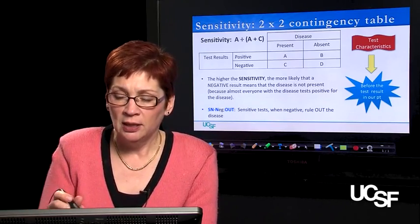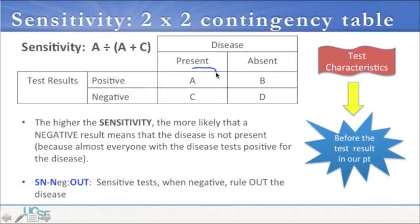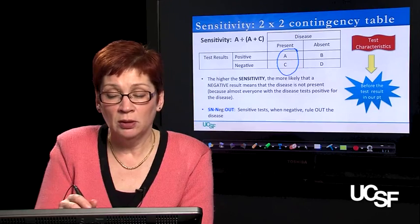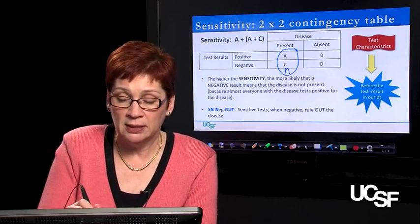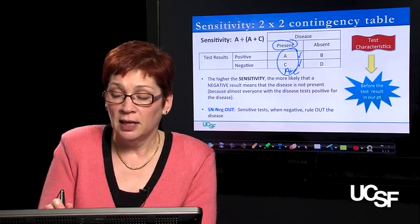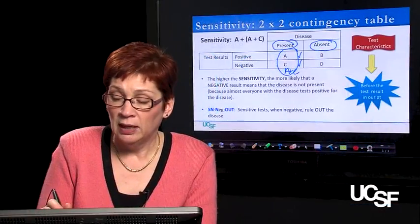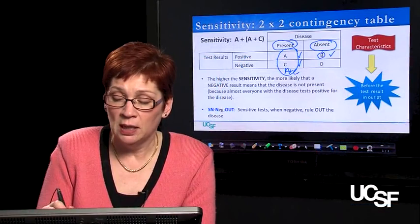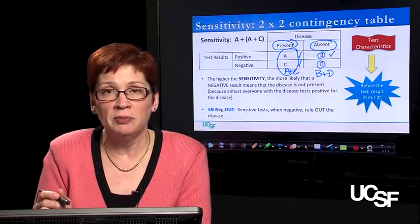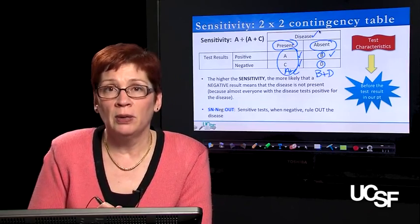Let me orient you to the table. The columns represent disease state. This column represents the population of patients in whom the disease is present — if you had 1,000 people, what number would have the disease in question? That's A plus C: the people in box A and box C all have the disease. On the other side, this column represents people in whom the disease is absent — that's B plus D. Some people call this the healthy population, but technically they could be free of this disease without being free of all diseases.